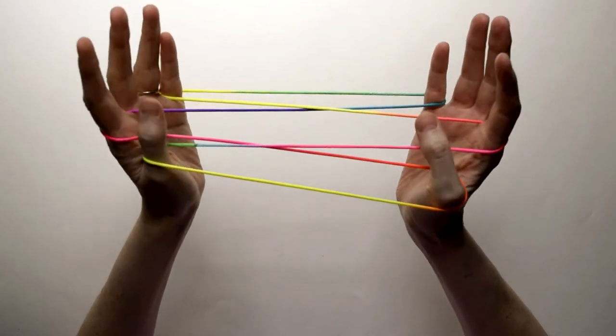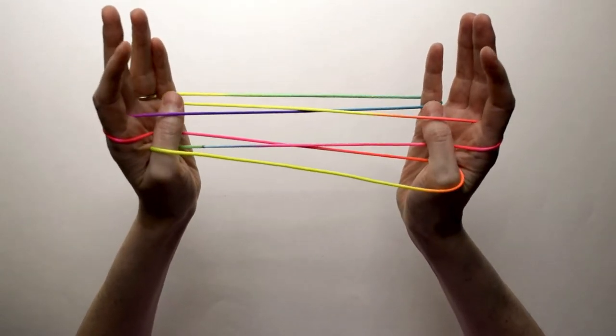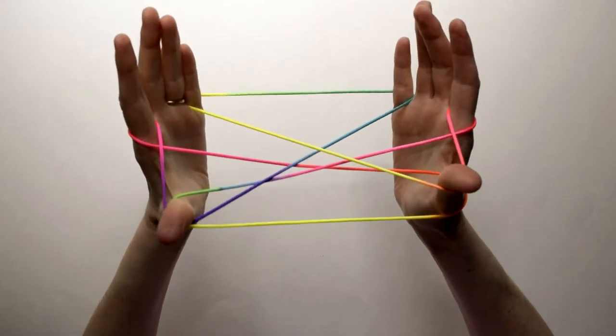Next you're going to take your thumbs, you're going to go over one loop, and then you're going to go under the next loop and pull back on your thumbs.